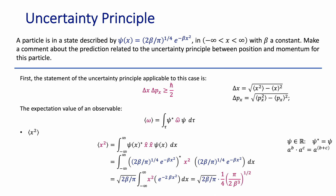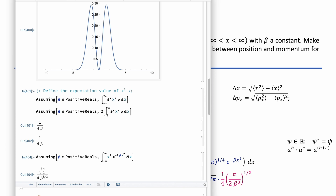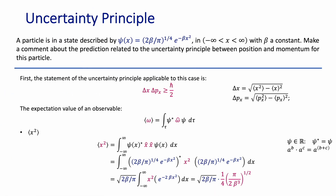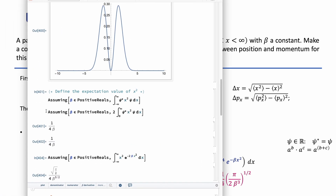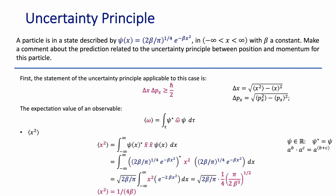After simplification, the expectation value of x² is 1/(4β), which matches the result obtained when including the normalization constant in the definition of ψ. These two quantities — ⟨x⟩² and ⟨x²⟩ — are needed to define the standard deviation of the position.